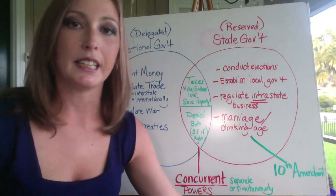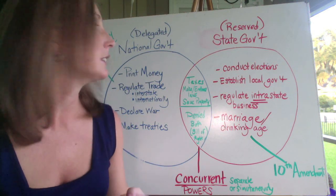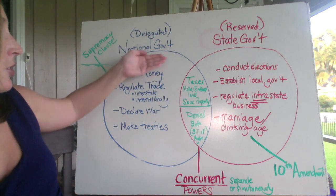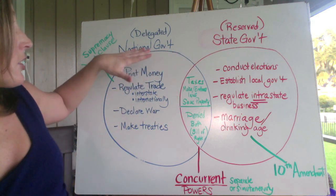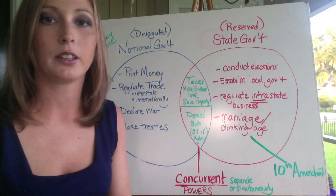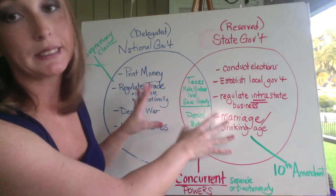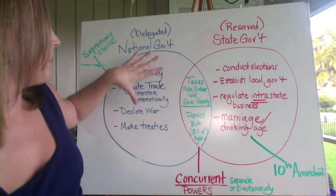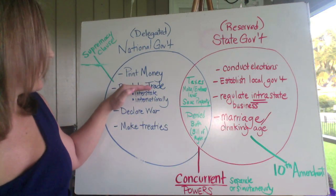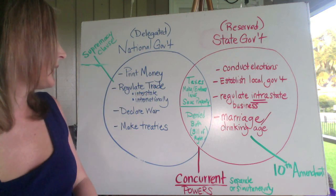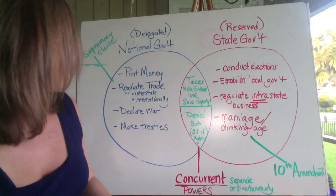Now, since the United States is a perfect example of a federal system, let's break it down further. You have delegated powers, which belong to the national government, and reserved powers, which belong to the state government. With a shared system, you have the ability to maintain both unity and diversity. The national government is responsible for printing money, regulating interstate and international trade, declaring war, and making treaties.